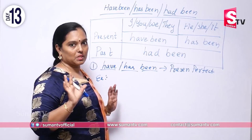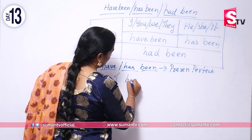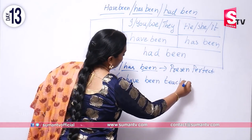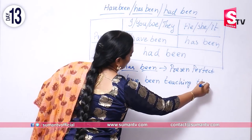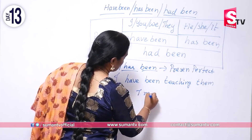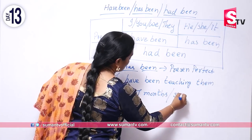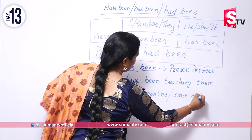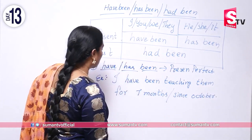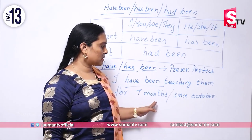For example: 'I have been teaching them for seven months' — or alternatively, 'since October.' The action started in the past and continues up to the present.